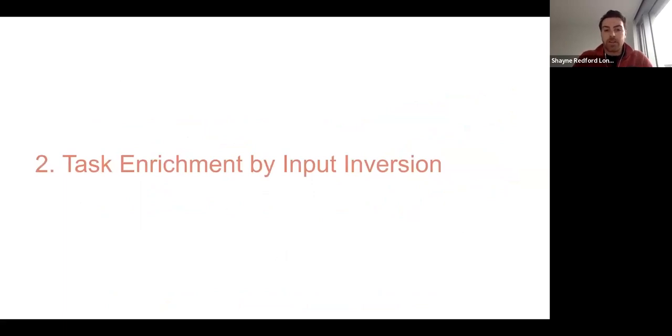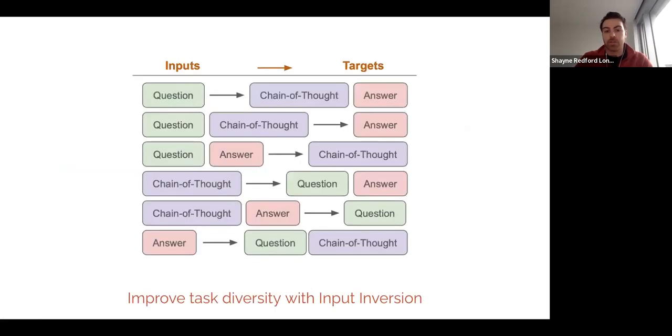So now let's look at enriching the number of tasks by using input inversion on existing datasets. So what does that mean? So the first row here shows you for a typical chain of thought question-answering dataset, the model's given the question, and it's asked to generate or taught to generate a chain of thought explanation followed by an answer. But given that you have these three components, you can permute their order to create six other or six total variations of input-output, input-target pairs.